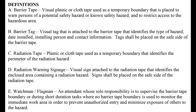Radiation Tape: Plastic or cloth tape used as a temporary boundary that identifies the perimeter of the radiation hazard. Radiation Warning Signage: A visual sign attached to the radiation tape that identifies the enclosed area containing a radiation hazard. Signs shall be placed on the safe side of the radiation tape.